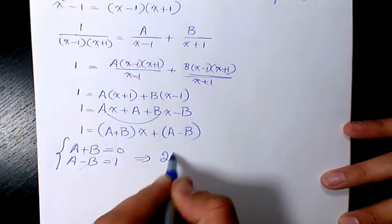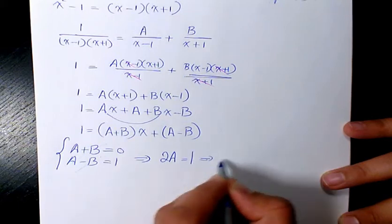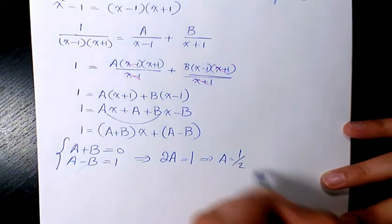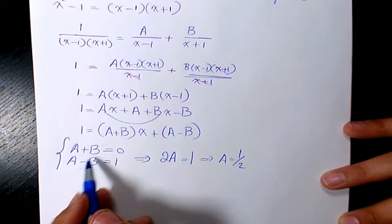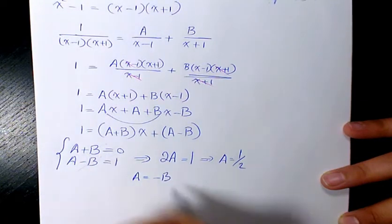And on the left-hand side, we have 2A. And on the right-hand side, we have just 1. So A will be 1 half. And since A plus B is 0, we can say A equals negative B. So B will be negative half.